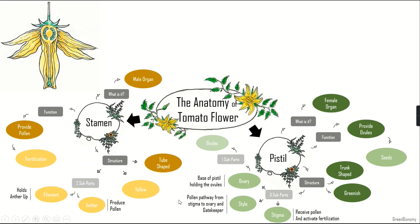The third sub-part of the pistil is the stigma. It receives the pollen and activates the fertilization. So the three parts of the female organ are: the ovary, which holds the ovules and will become a tomato; the style, which is the tube through which pollen travels from the stigma to the ovary; and the stigma, which receives the pollen and activates the fertilization process. The stamen and the pistil together are the reproductive parts of the flower.